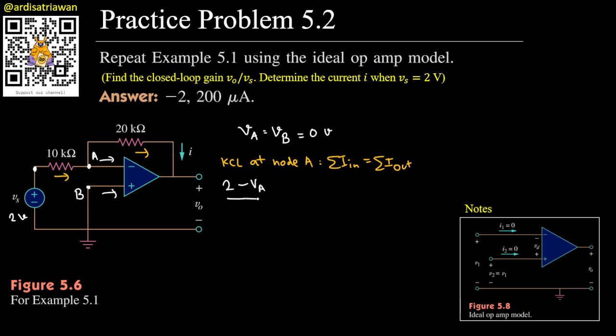That will equal to this current that goes into the op amp, but remember this is an ideal op amp, so the current that goes into the op amp is zero. So I will just plug zero here, and then plus this current here. So that current I will have va minus this one will be v0, then divided by 20 kilo ohm.